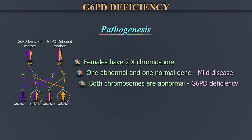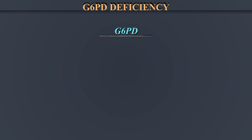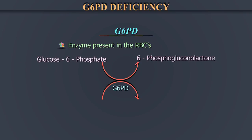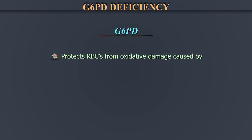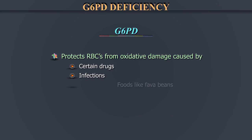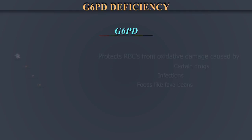G6PD is an enzyme present in the RBCs, which catalyzes conversion of nicotinamide adenine dinucleotide phosphate, or NADP, to its reduced form NADPH, in the pentose phosphate pathway. G6PD protects the RBCs from oxidative damage caused by certain drugs, infections, and foods like fava beans, by producing NADPH.